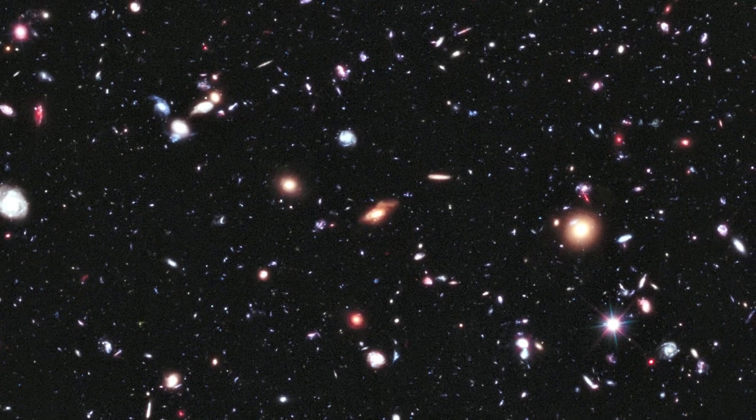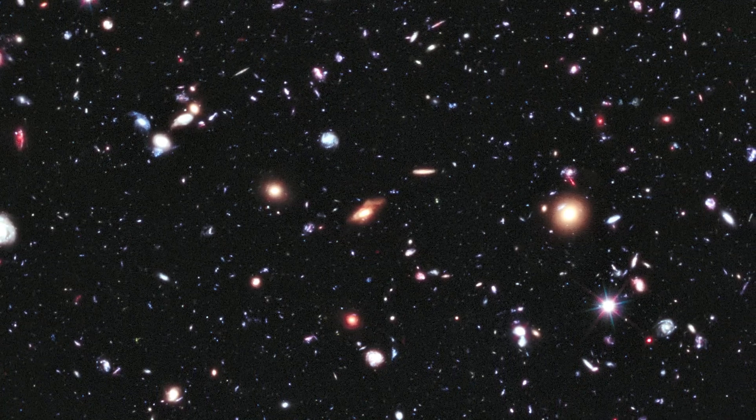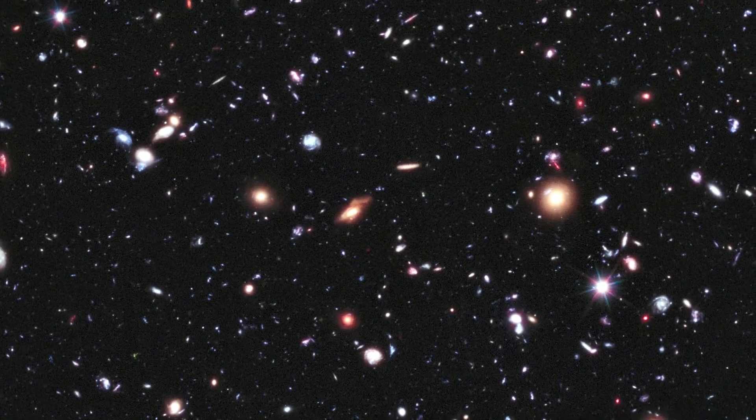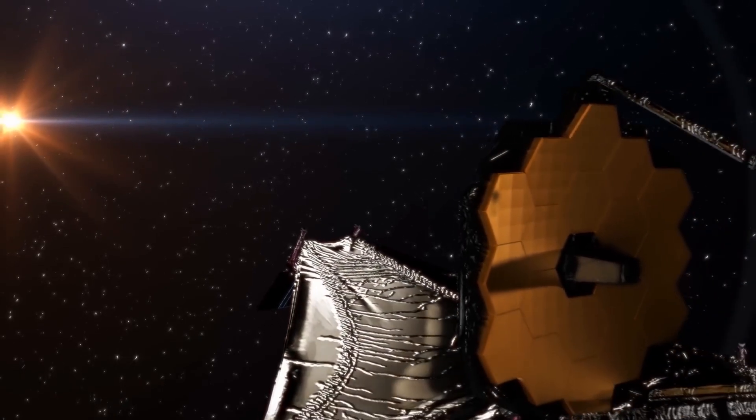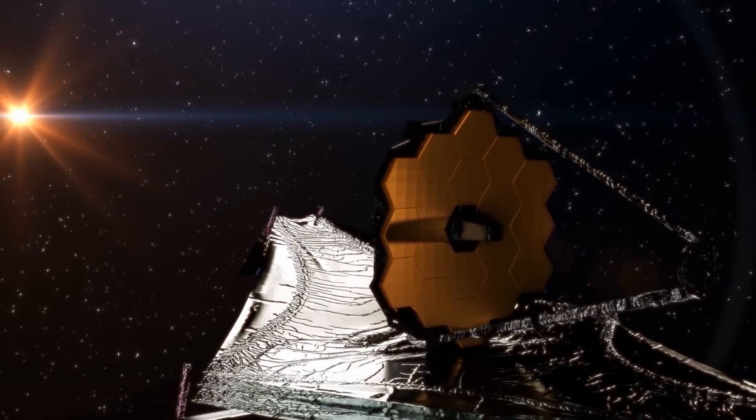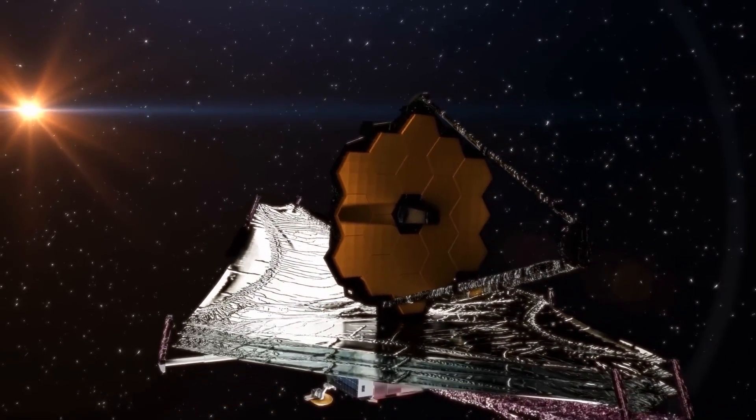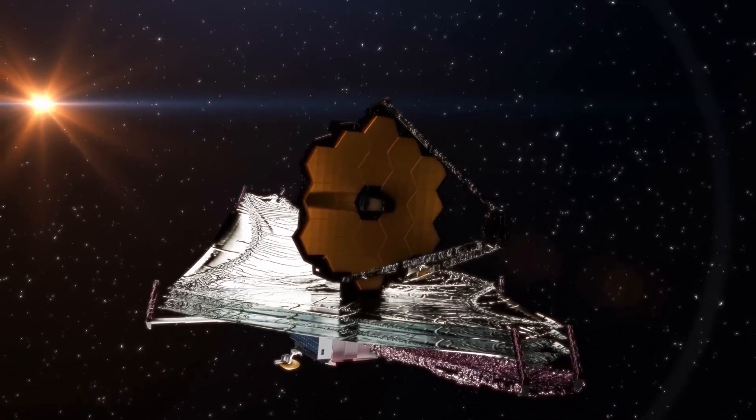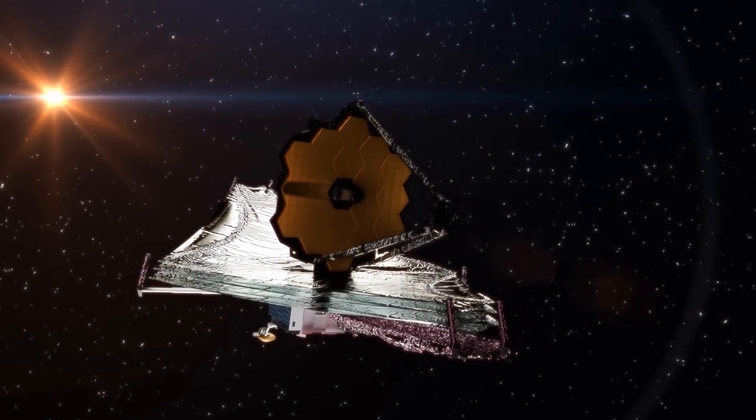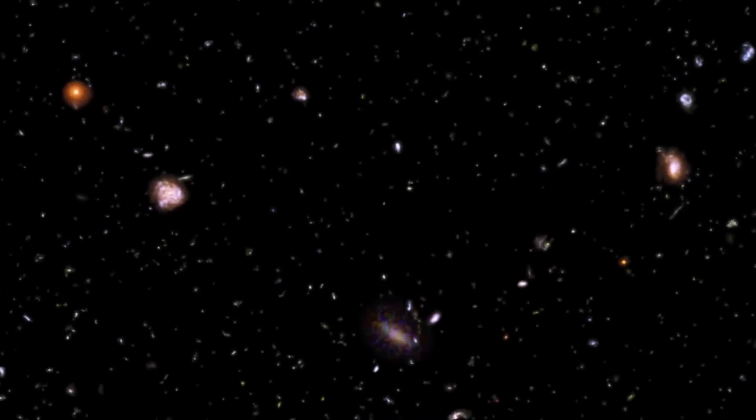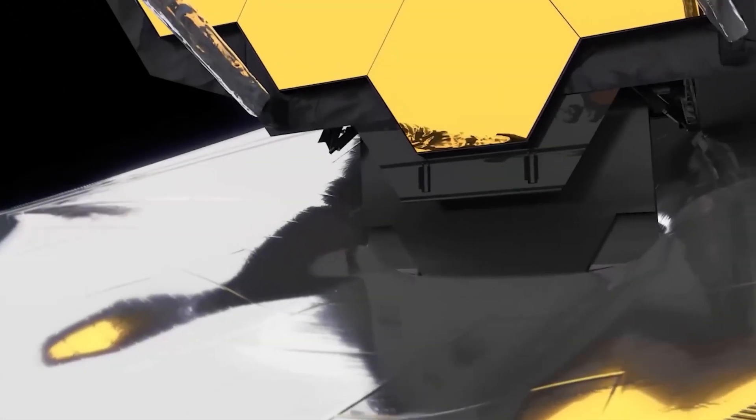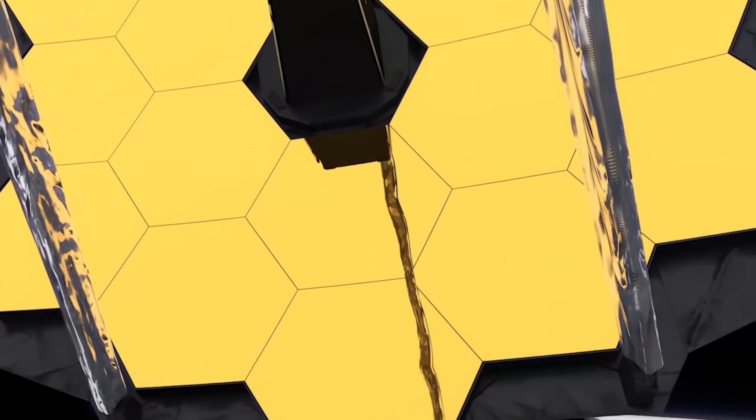Spectral data confirmed that these galaxies are at the edge of our view, some even further away than Hubble could see. This discovery is crucial because it validates one of the most important tasks of the James Webb Space Telescope, which is to study the early universe through light that has been traveling for more than 13.5 billion years. The ability to measure extreme redshifts is what sets James Webb apart, allowing astronomers to peer into the infrared range and observe the earliest galaxies in the universe.